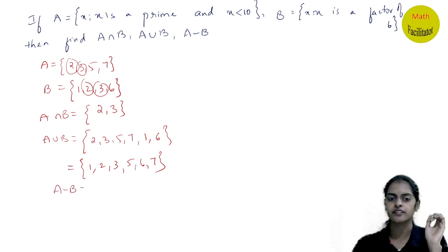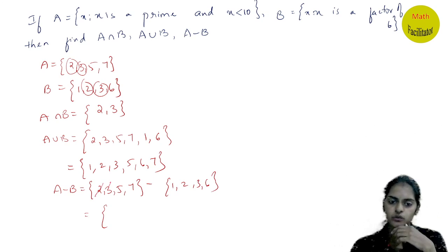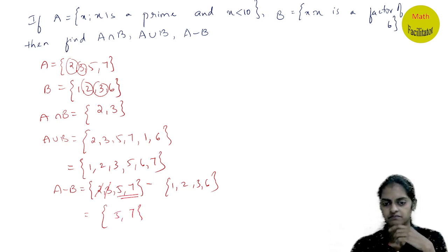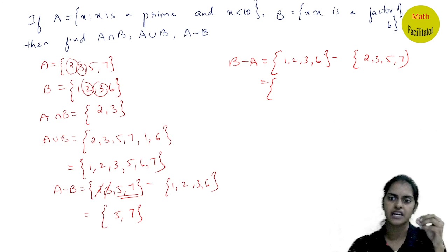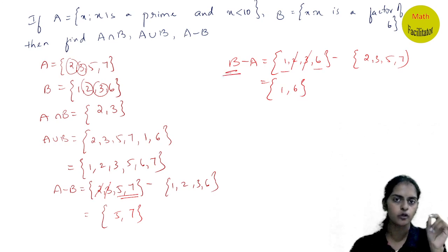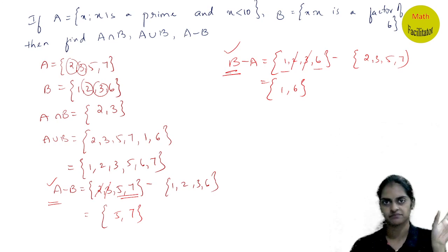Next, find A minus B. Write set A = {2, 3, 5, 7} and set B = {1, 2, 3, 6}. For B minus A: out of B, remove elements common to A. Common elements of A and B are 2 and 3, so remove them from B. For A minus B: from A, remove elements common with B, leaving only the elements unique to A.